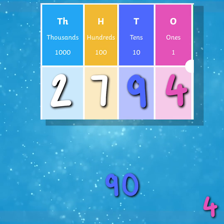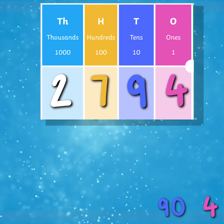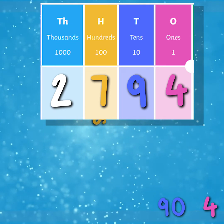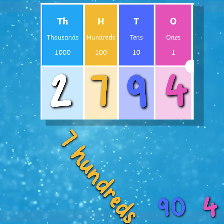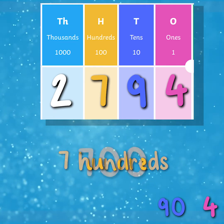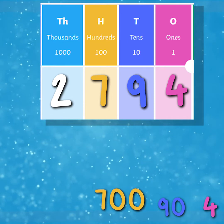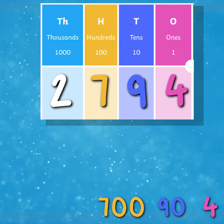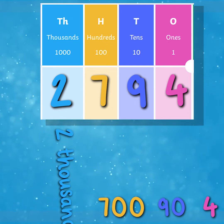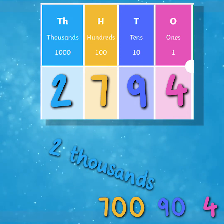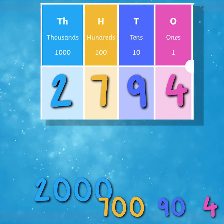Let's try and find the value of the digit seven. We know that seven is in the hundreds column. This means we have seven hundreds, which has a value of 700. And finally, let's work out the value of the digit in the thousands column. The digit in the thousands column is two, and we know that two thousands makes two thousand. Therefore, the value of the two is two thousand.